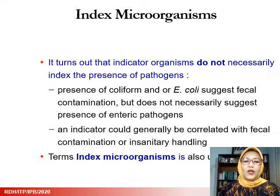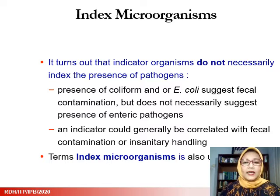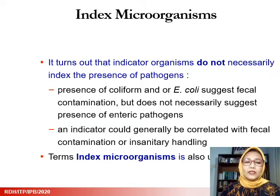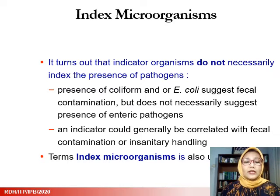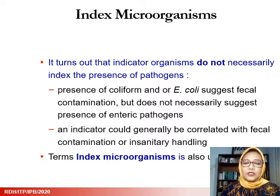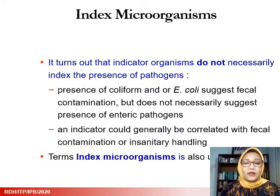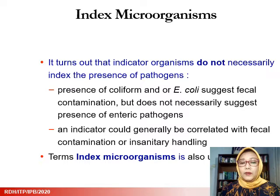Now we are going to learn about index microorganisms. It turns out that indicator organisms do not necessarily index the presence of pathogens. Presence of coliform and/or E. coli suggests fecal contamination but does not necessarily suggest the presence of enteric pathogens such as E. coli O157:H7 or Salmonella. An indicator can generally be correlated with fecal contamination or insanitary handling. Therefore, people developed the concept of index microorganisms.